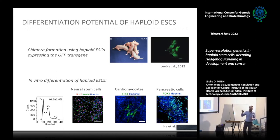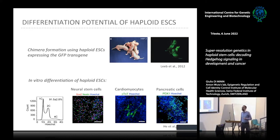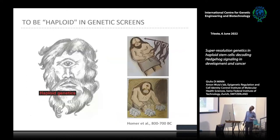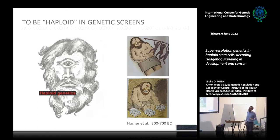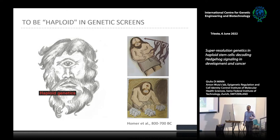The first one who understood the relevance of having just one single target to hit, instead of two, in loss-of-function approaches, was the Greek poet Homer. Imagine what would have happened to Ulysses if Polyphemus had been a giant with two eyes instead of one — he would have had considerably more trouble escaping the giant's cave, and my expectation is that his travel would have been rather short.